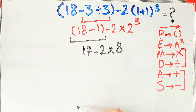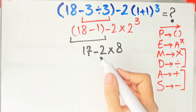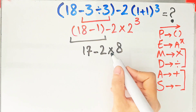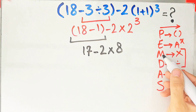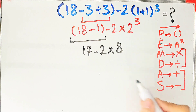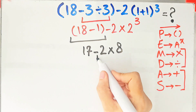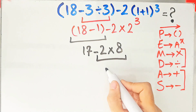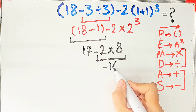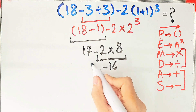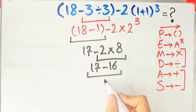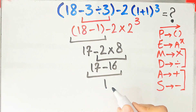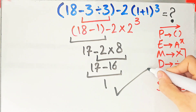In this step we have subtraction and multiplication. We do the multiplication first because multiplication has higher priority than subtraction. Negative 2 times 8 equals negative 16, and we have 17 minus 16 which equals 1. Thanks for watching guys, please subscribe to the channel and leave a comment. Goodbye!